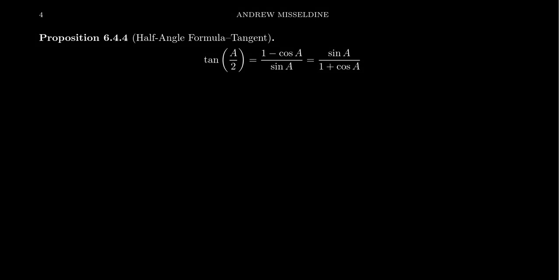There is a half-angle identity for tangent, and there are actually two versions you could use. Tangent of a over two is equal to one minus cosine of a over sine of a, or it's also equal to sine of a over one plus cosine of a.